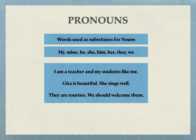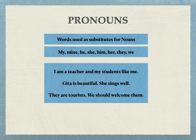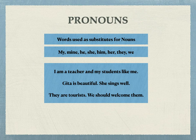Pronouns are words used as substitutes for nouns: my, mine, he, she, him, her, they, we. They actually stand as a substitute for a noun. For example: 'I am a teacher and my students like me' — here 'my' is a substitution for 'I'. 'Geeta is beautiful. She sings well' — instead of repeating Geeta, you use the substitute 'she'. 'They are tourists. We should welcome them' — instead of repeating 'tourists', we use 'them'. So pronouns are substitutes for nouns.